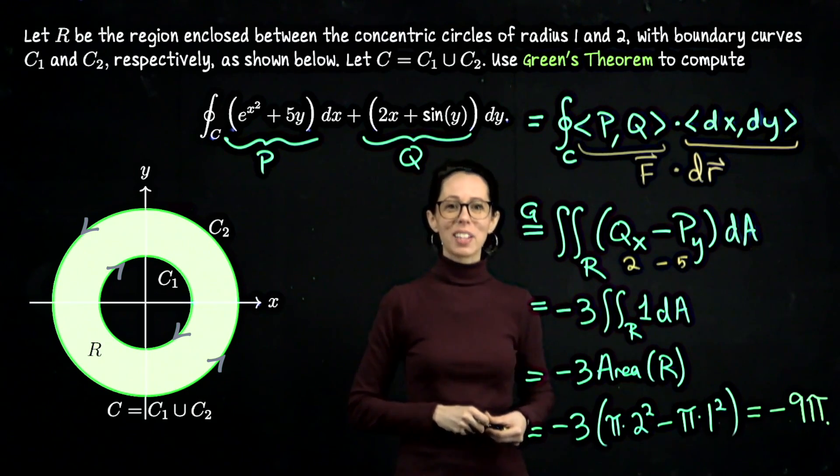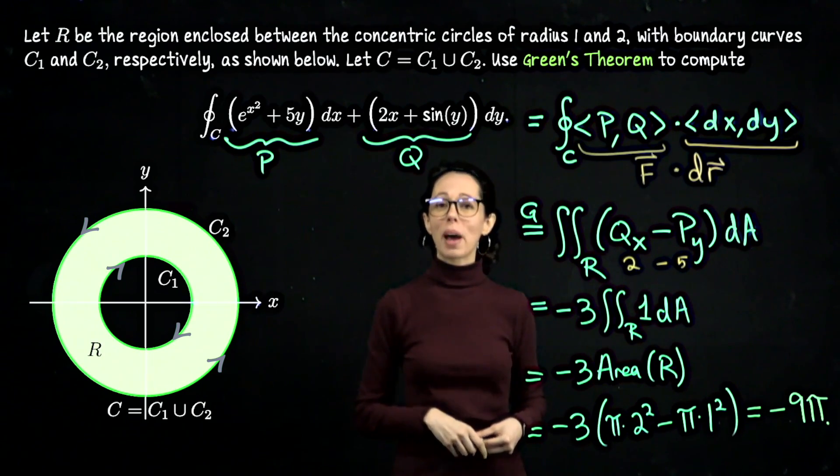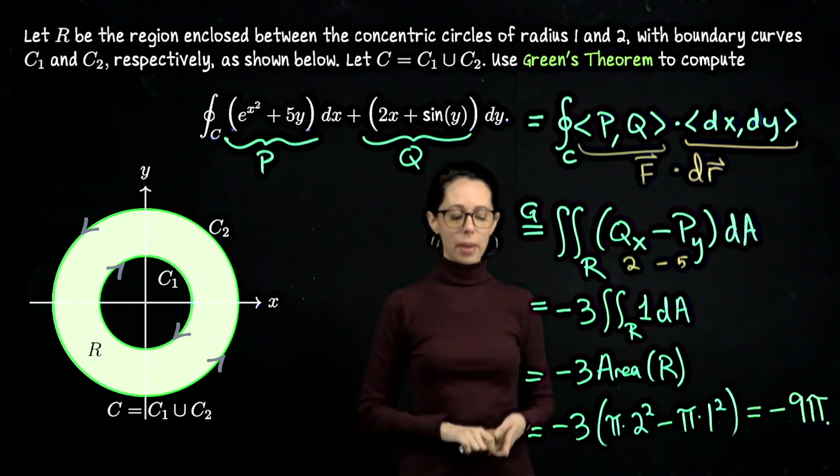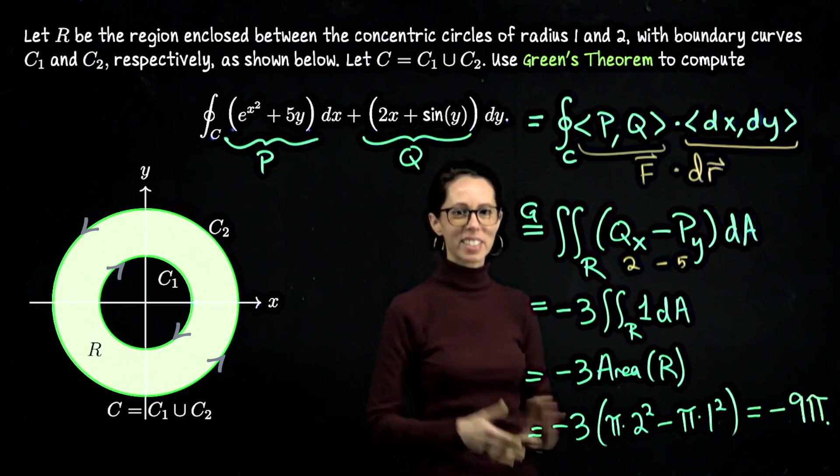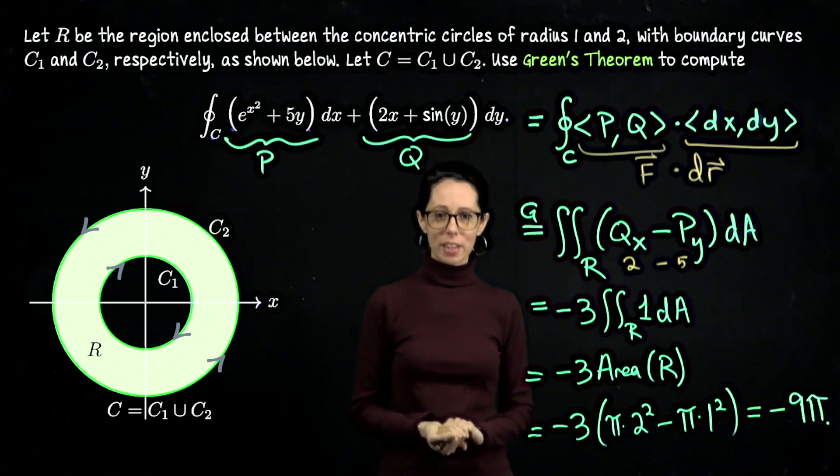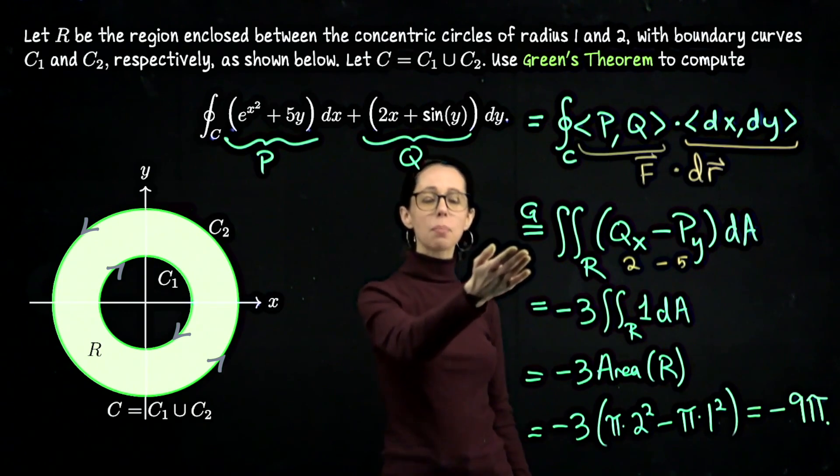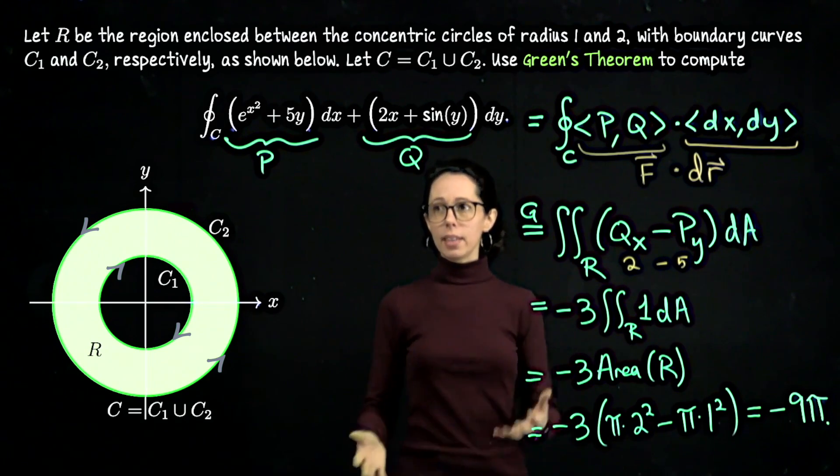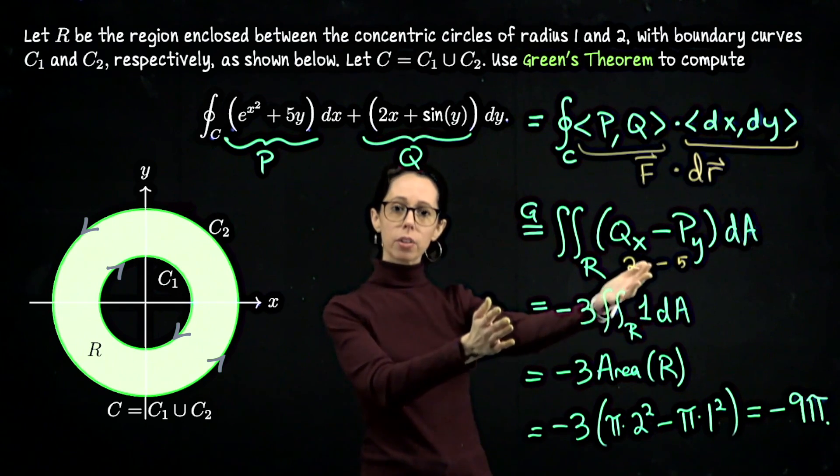Look how much better that was than trying to do the circulation integral by literally computing the vector line integral as it's written. So that would have been really tedious, maybe even impossible. So that's what it means to use Green's Theorem and that's what I want you to really take away from this example is that to use Green's Theorem means to switch. In this case it was switching from the circulation integral to a double integral.